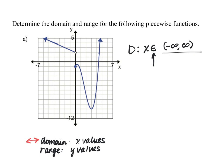For the range, we're looking at the output values, which are the y values. So now we're looking from bottom to top — from the lowest, smallest y value to the largest, highest y value on this graph. Looking at the bottom of the graph, the lowest point is this minimum here, and the y value there looks to be negative 10. So this graph does not go below a y value of negative 10.